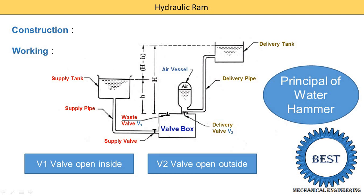Water comes from the supply pipe with high velocity and fills into the valve box, where the water comes to rest conditions. The water level starts increasing in the valve box up to a certain level. Then suddenly the waste valve V1 is closed when the valve box is completely filled with water. When the waste valve V1 is closed, the pressure in the valve box rises suddenly.